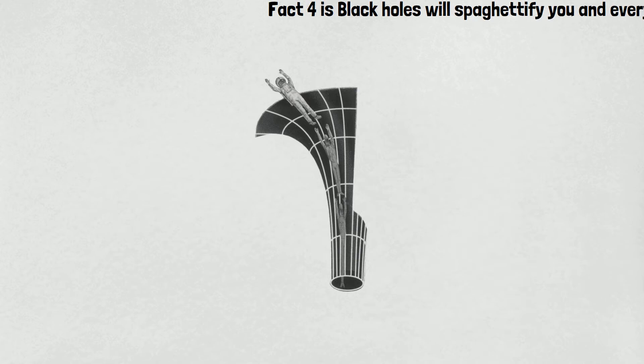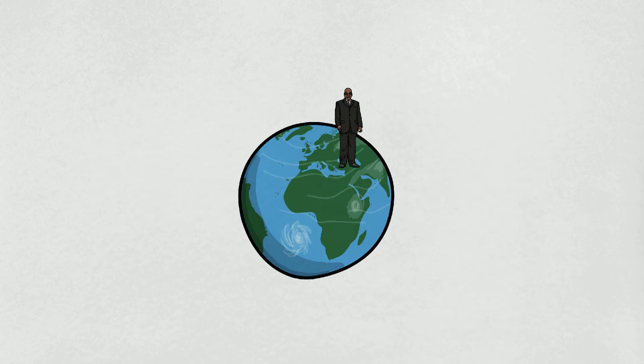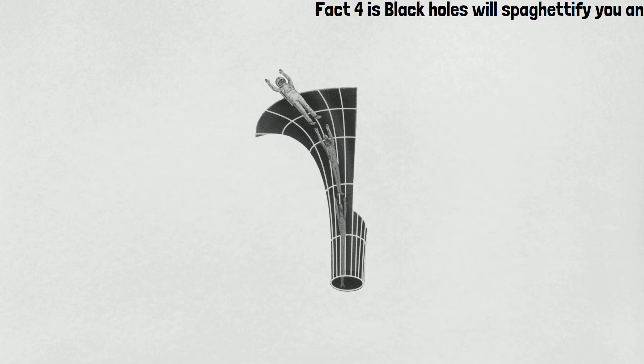The way it works has to do with how gravity behaves over distance. Right now your feet are closer to the center of Earth and are therefore more strongly attracted than your head. Under extreme gravity, say near a black hole, that difference in the attraction will actually start working against you as your feet begin to get stretched by gravity's pull.